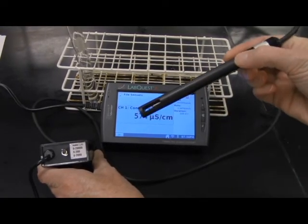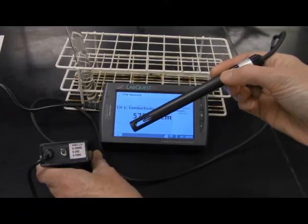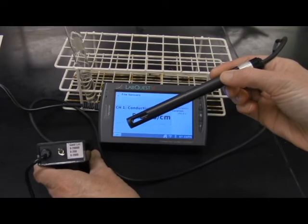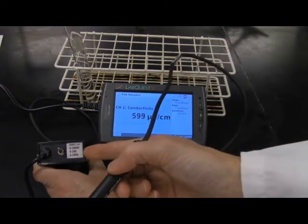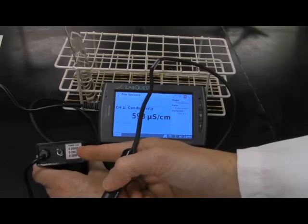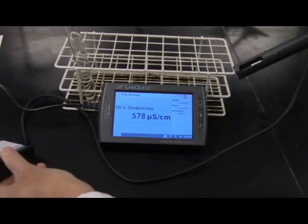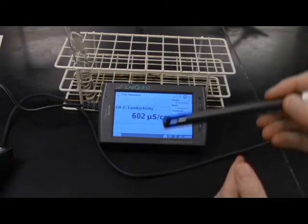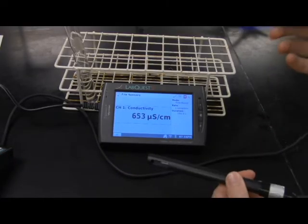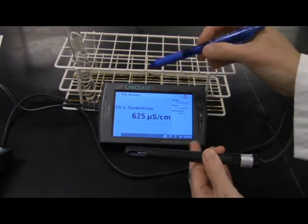We're in the lab now and this is the conductivity probe that you'll be using. The box connected to it needs to be selected for the 0 to 20,000 microsiemen range. And I'm going to walk you through the calibration procedure. There are instructions in the lab manual for it, but to show you how this works.